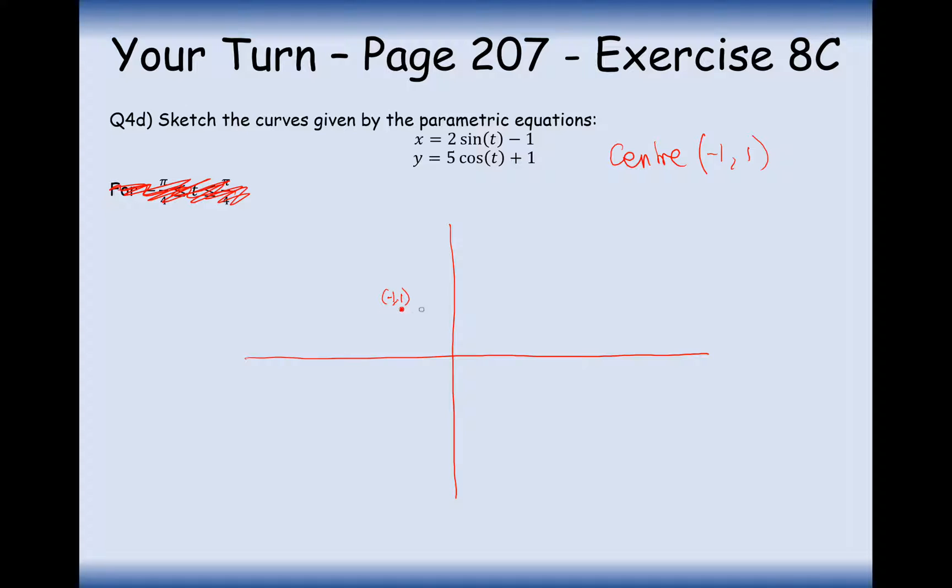And the x radius is going to be 2. So we're going to have another point out here and another point out here. I think I may have drawn this graph a little bit too big on the scale. Anyway, the y radius is going to be 5.